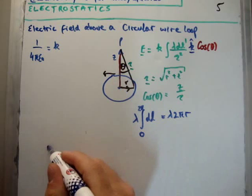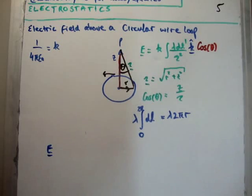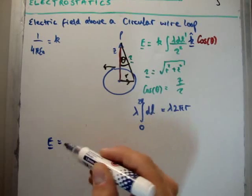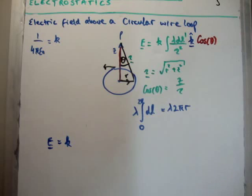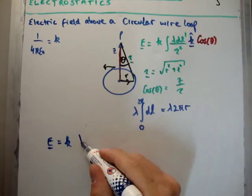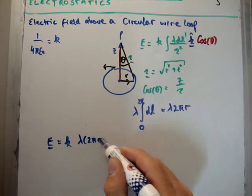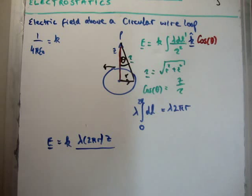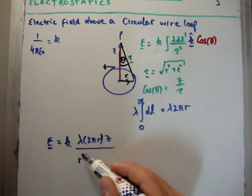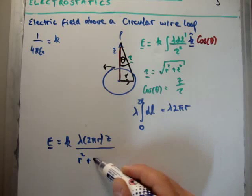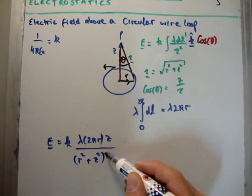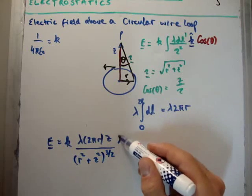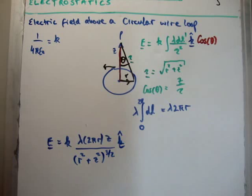So putting it all together, the electric field above our circular loop is going to be 1 over 4πε₀, we're going to have λ times 2πr, we're going to have z, and we're going to divide by (r² + z²) to the power of 3/2, and it's in the k-hat unit vector direction.